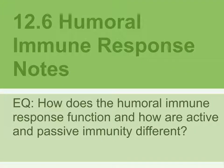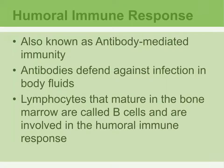This is 12.6 Humoral Immune Response Notes. The essential question is: how does the Humoral Immune Response function and how are active and passive immunity different? The Humoral Immune Response is also called antibody-mediated immunity. Antibodies are the actual proteins that defend against infection, and they are located in various body fluids. Lymphocytes that mature in the bone marrow are called B cells, and these are the cells involved in the Humoral Immune Response.